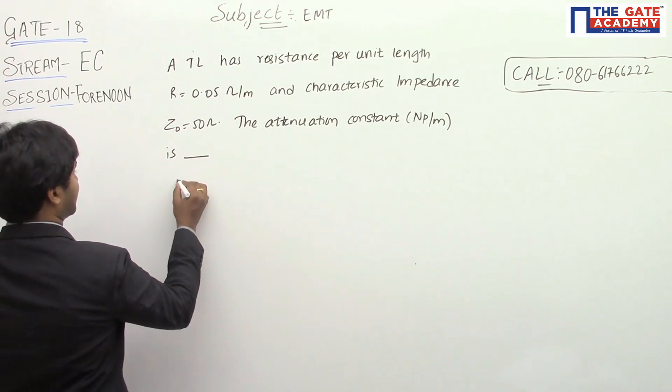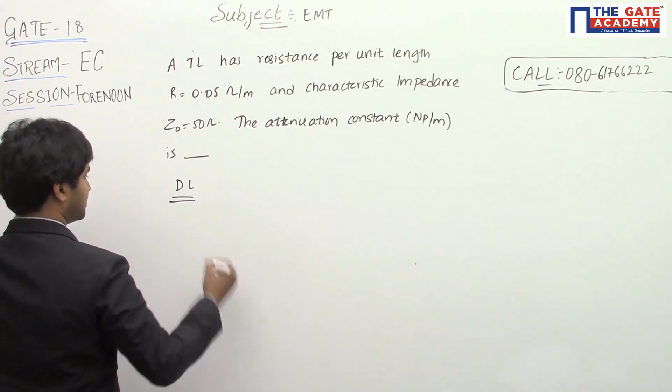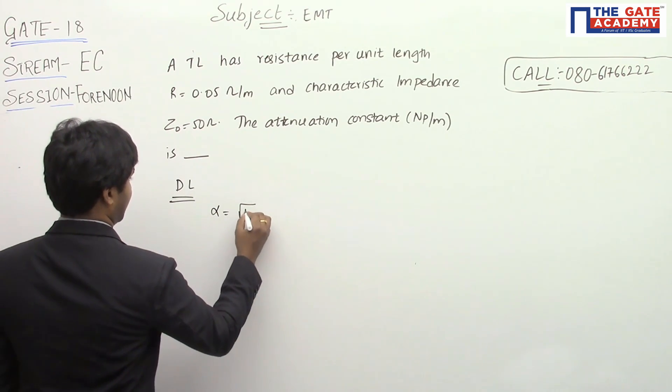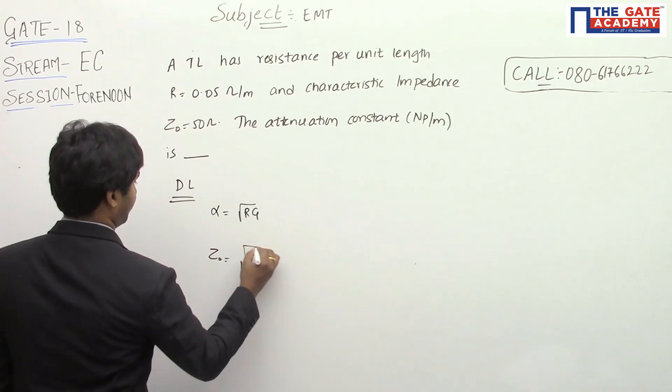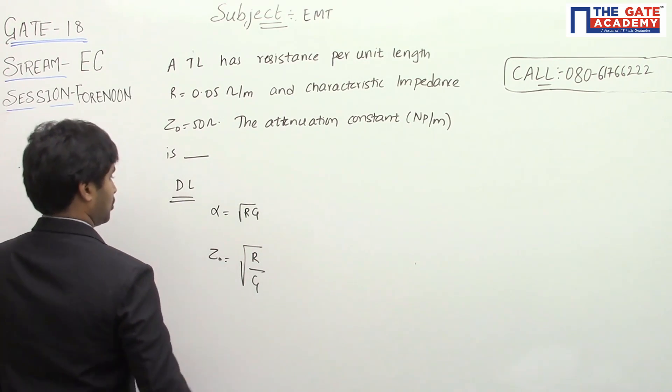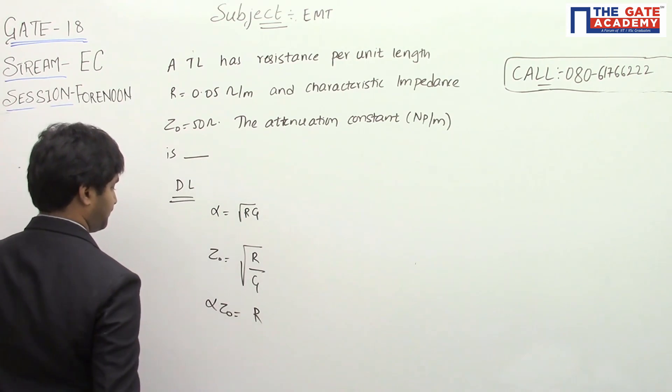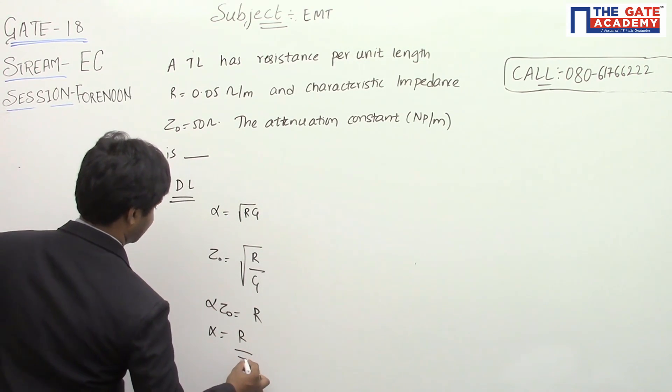When we write the condition for distortionless lines, alpha is given by square root of RG, and Z0 equals square root of R by G. So alpha times Z0 equals R, therefore alpha equals R by Z0.